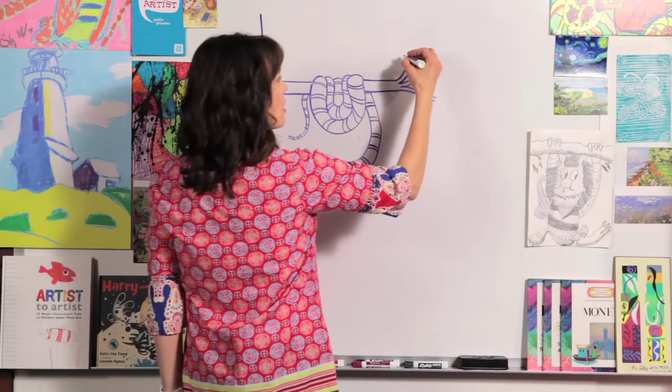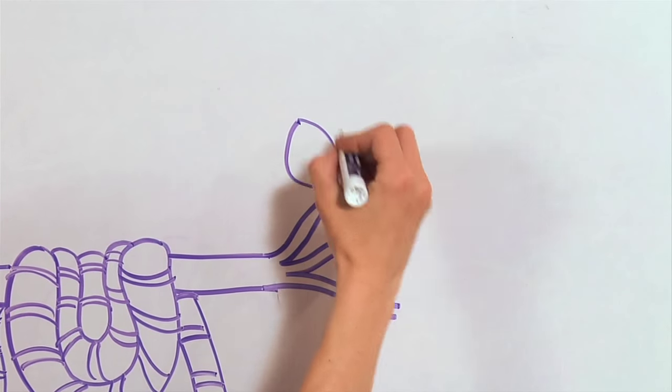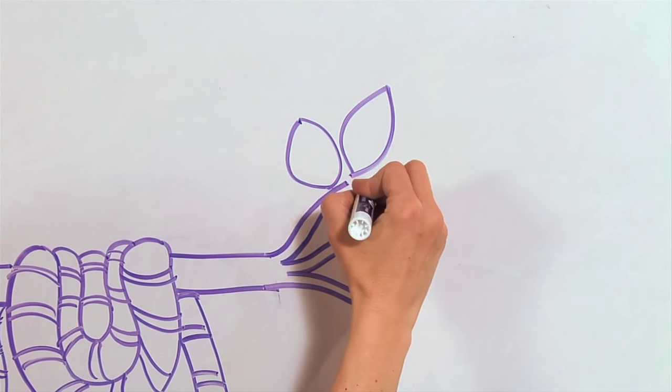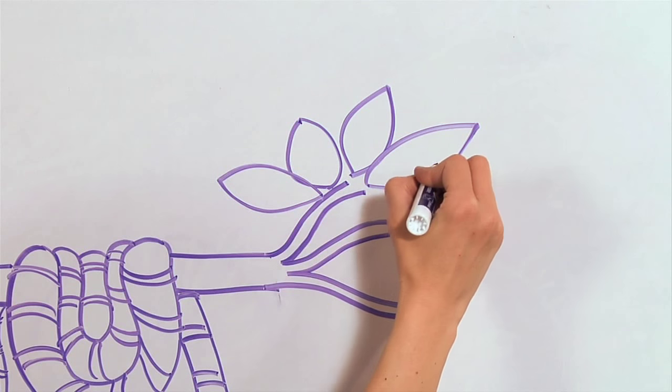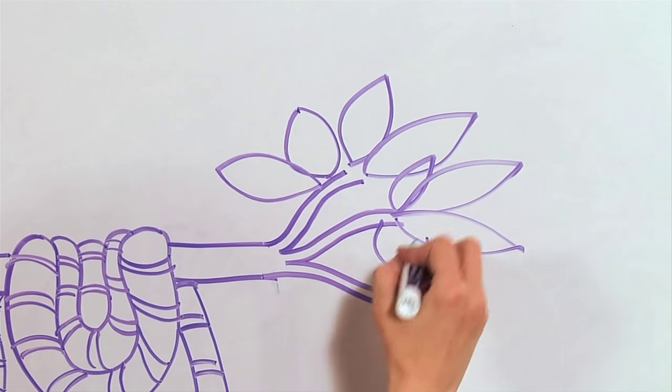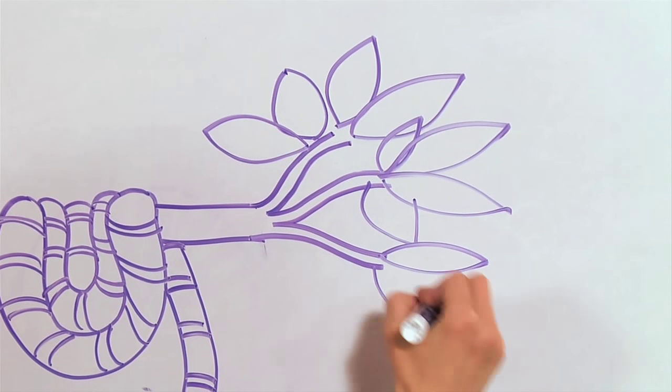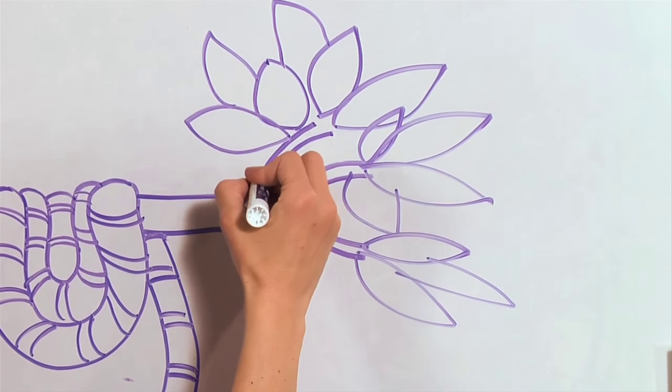We're going to draw some big leaves. So we're going to curve one way and the other way. And we're just going to draw a bunch of big leaves. Like this. So curve up and back down. Up, down. And I'm even going to put some behind like that.